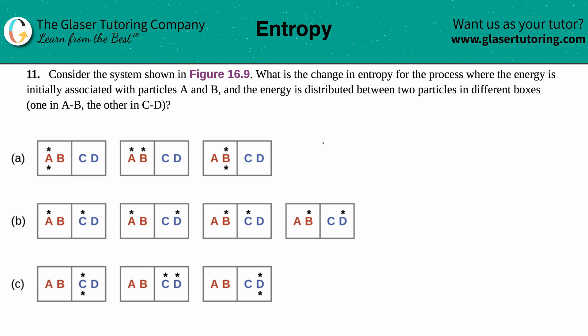Number 11 considers the system shown in figure 16.9, which is this figure right here. What is the change in entropy for the process where the energy is initially associated with particles A and B, and the energy is distributed between two particles in different boxes, one in A-B and the other in C or D?